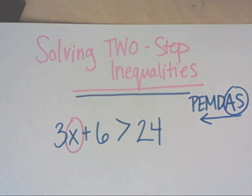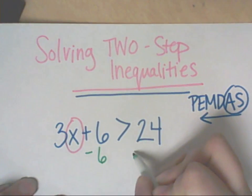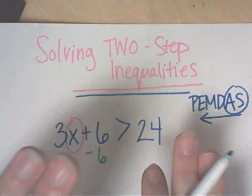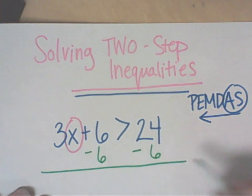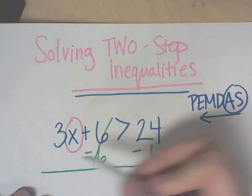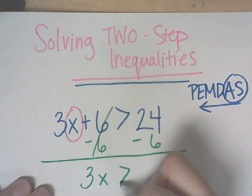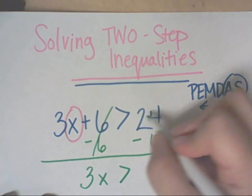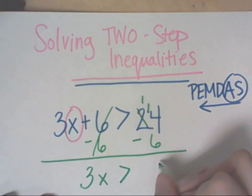So to move that, I have to do the opposite. The opposite of adding 6 is subtracting 6. And remember, we have to keep it balanced. So whatever we do on one side, we must do to the other. So positive 6 and negative 6 will cancel. On the left side, that's going to leave us 3X is greater than. And we need to go ahead and subtract these. And so I have 18.